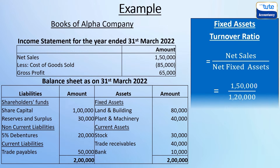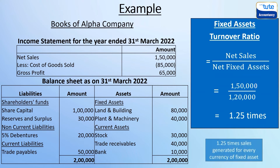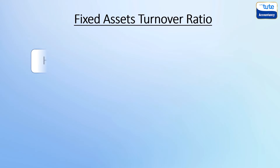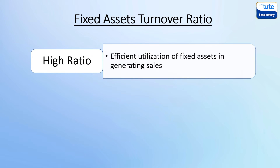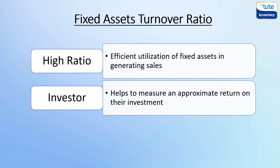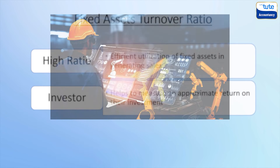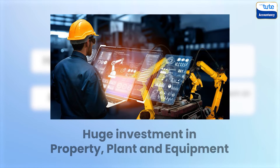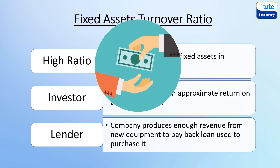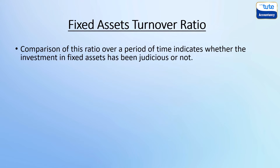Using the same Alpha Company example, net sales are 1,50,000 and net fixed assets are 1,20,000 — that is 80,000 of land and building plus 40,000 of plant and machinery — giving us a fixed assets turnover ratio of 1.25 times. A high fixed assets turnover ratio indicates efficient utilization of fixed assets in generating sales. From an investor's point of view, it helps measure an approximate return on their investment, especially in the manufacturing industry where companies have huge investment in property, plant, and equipment.